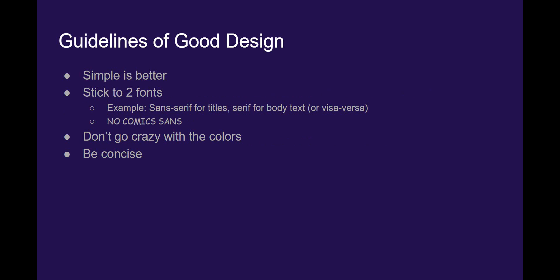Guidelines of good design: simple is better. Stick to two fonts — sans serif for the title, such as Arial or Helvetica, and serif for body text, or vice versa. Serif would be something like Times New Roman. Don't use Comic Sans — it looks very unprofessional. Don't go crazy with colors; if you want to use ten or twelve different colors, maybe reconsider for something more simple. And finally, just be concise with your wording — maybe just a couple of paragraphs at most to explain what you did. Remember to caption all of your pictures so viewers can get information that way if they choose not to read your paragraphs.